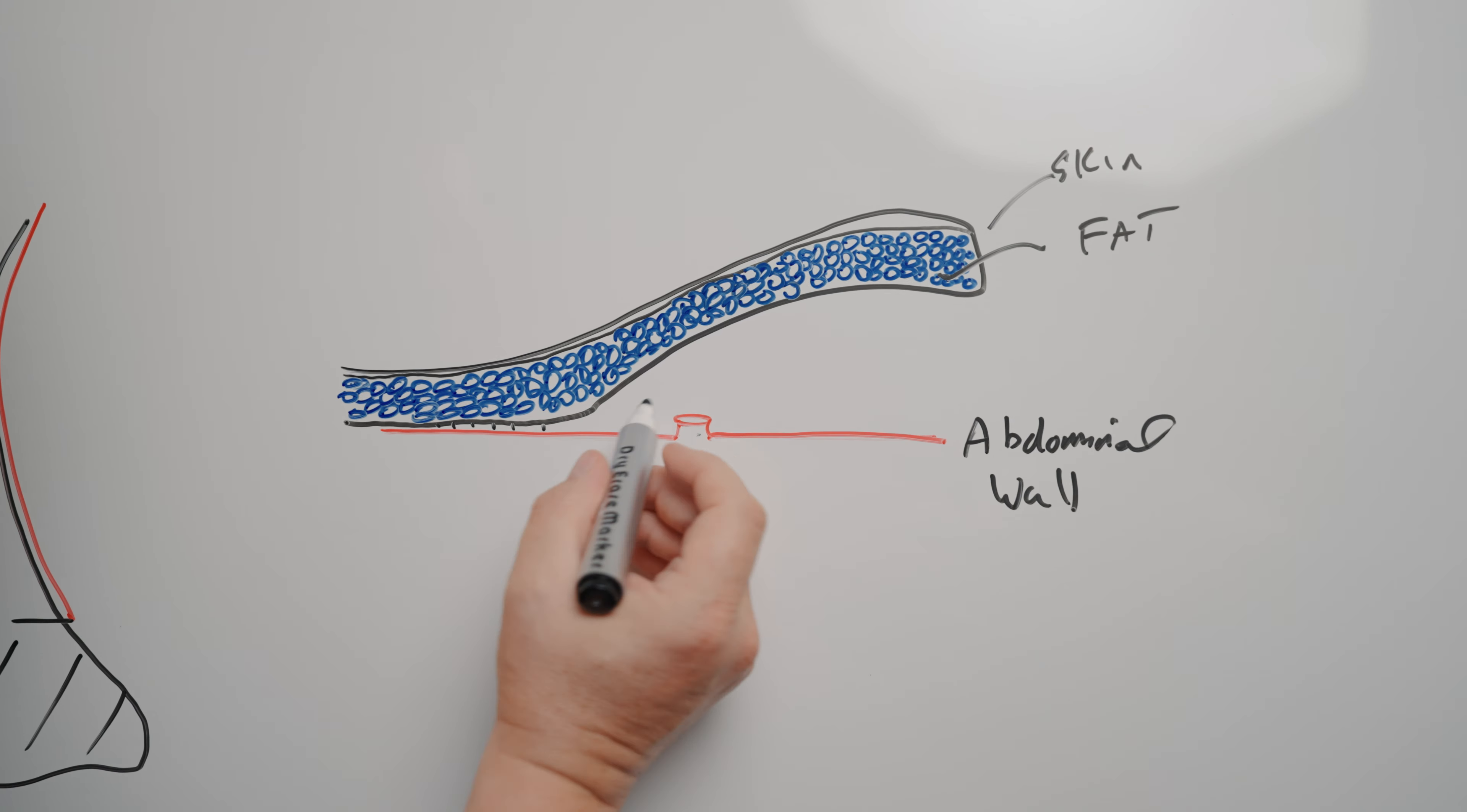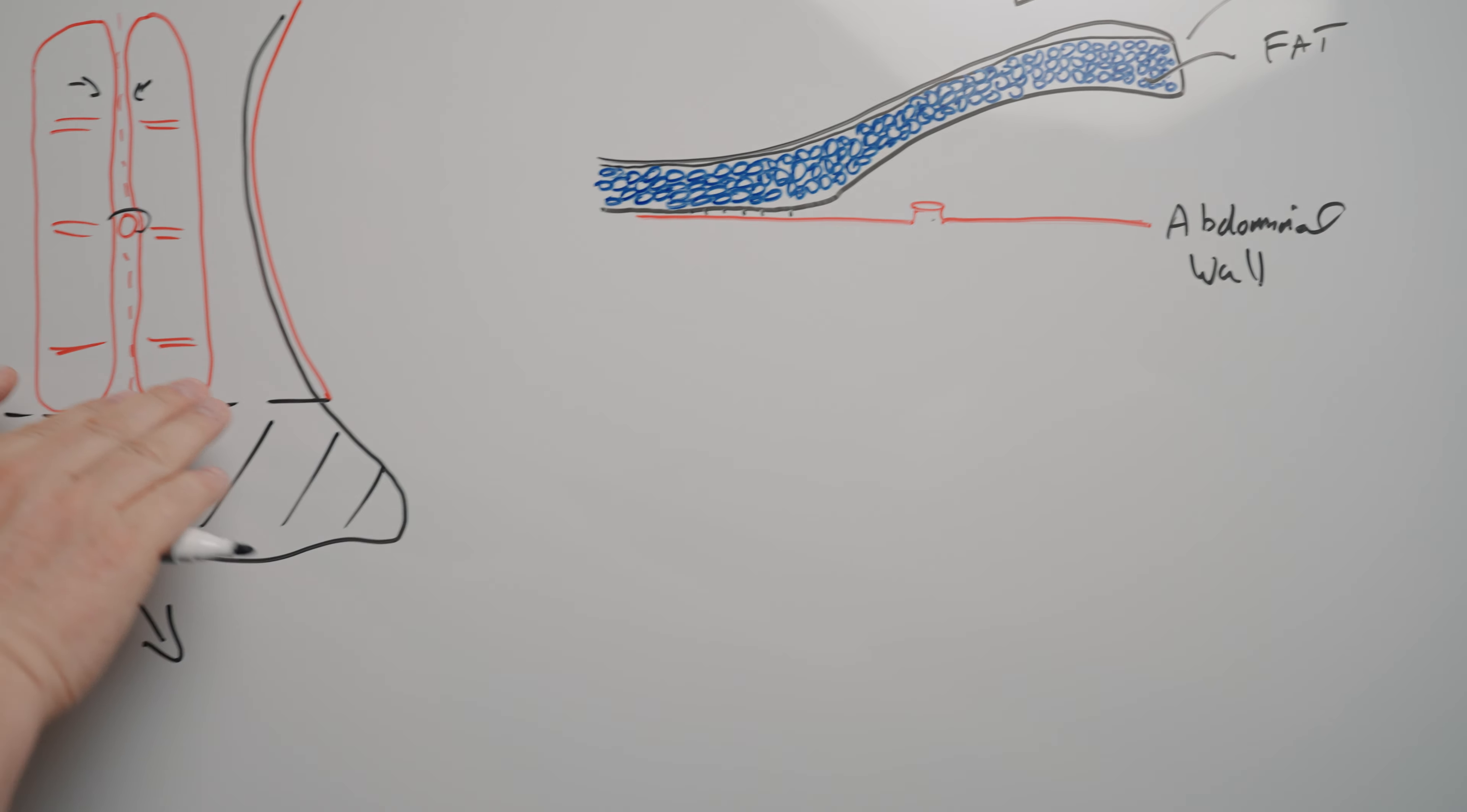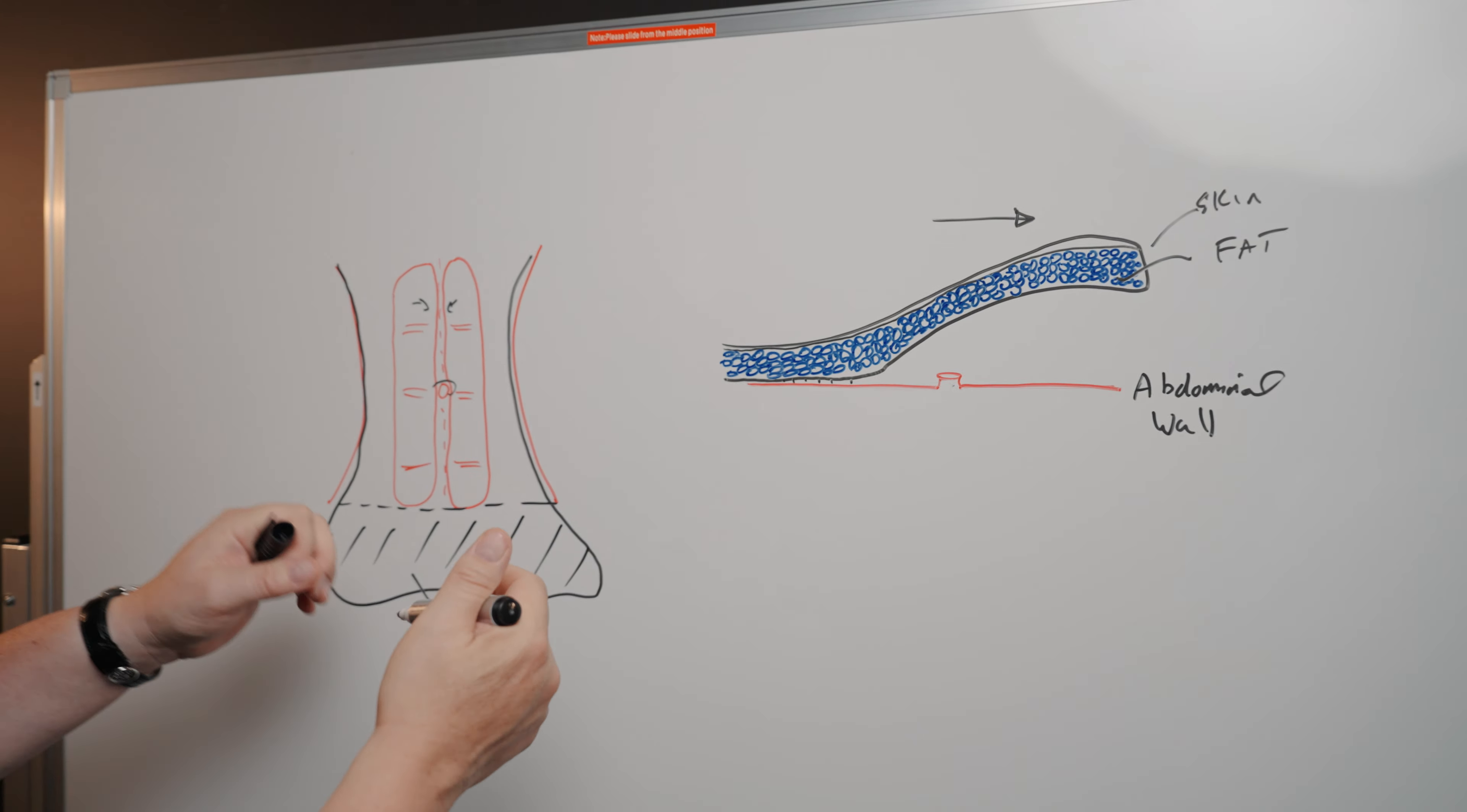We literally cut through them so that we can lift this up, so we can then pull it down. We pull it down so that this tissue gets lifted up off the abdomen, and then pulled down and cut off. That's generally what a tummy tuck is.